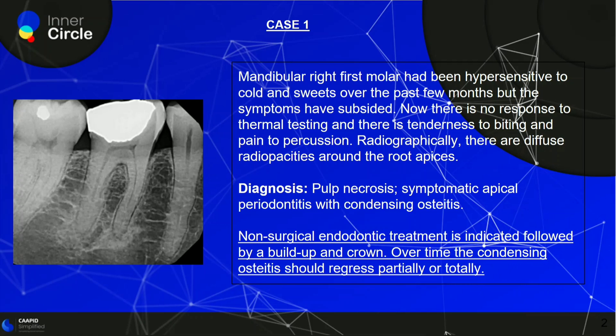Why pulp necrosis? Because there is no response to thermal testing. Along with this, we say symptomatic apical periodontitis because there is tenderness to biting and pain to percussion. We also add condensing osteitis because of the radiopacities we see around the root apices. The treatment is non-surgical endodontic treatment or root canal treatment, followed by a buildup and a crown. Over time, the condensing osteitis should regress partially or totally.